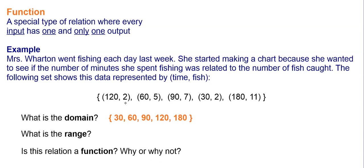The range then would be all of the outputs. In this case, how many fish she caught. So it would be 2, 5, 7, 2, and 11. Again, we would write this from smallest to largest. But keep in mind, even though we got the number 2 twice, we only write it once. I don't need to know how many times I got it in the range. I just need to know that I got that number.